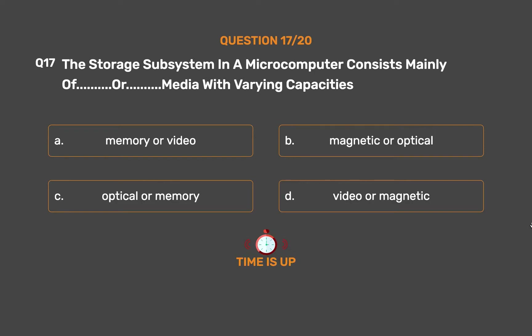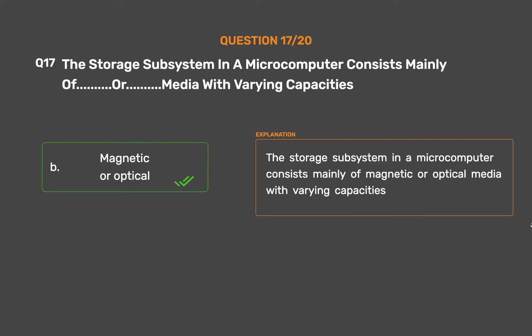The correct answer is Option B: Magnetic or optical. The storage subsystem in a microcomputer consists mainly of magnetic or optical media with varying capacities.